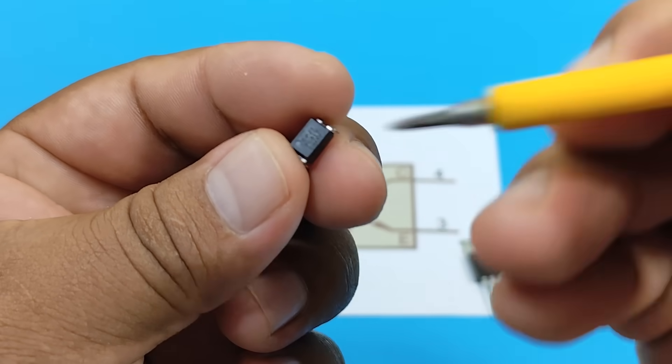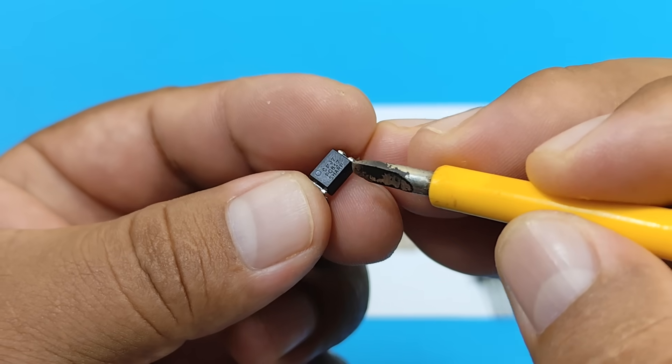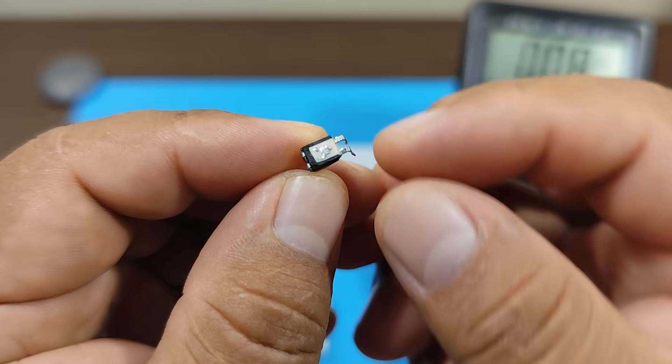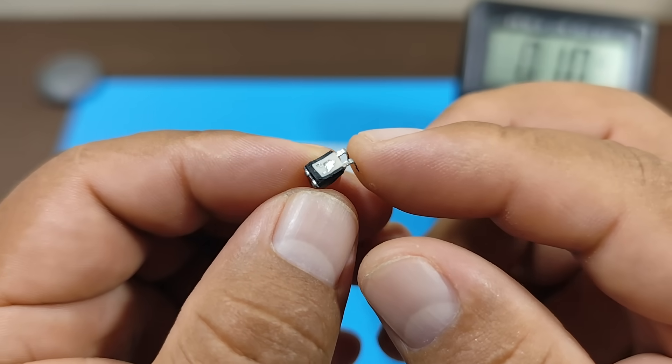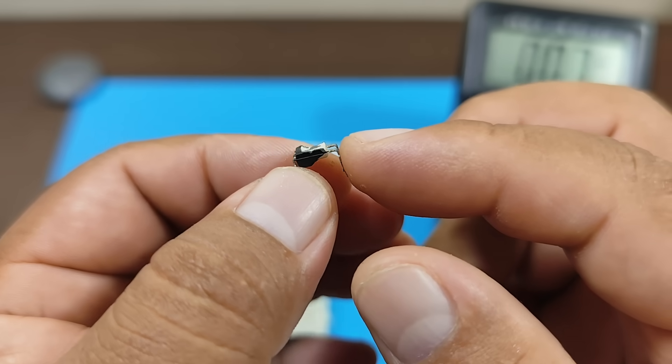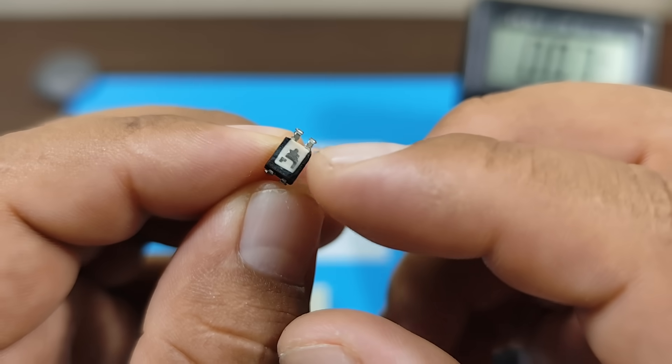To do this, we need to remove part of the optotransistor's package. Great! We've just removed the package from our optotransistor. As you can see, the package is gone, and we can observe what's inside the optocoupler.